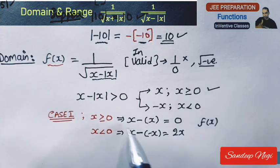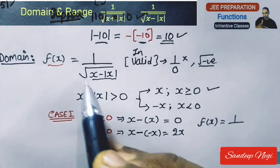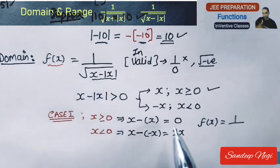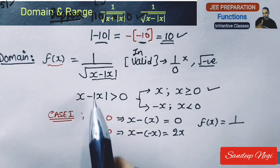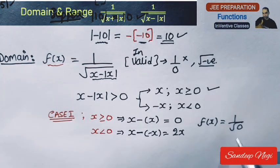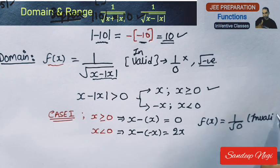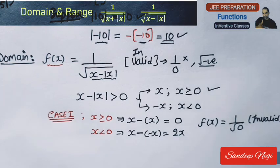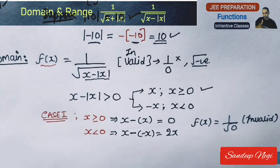Now let's check Case 1. The function becomes 1 upon under root of 0. Since 1 upon 0 is invalid, this means whenever x is 0 or greater than 0, the function gives an invalid answer. So x cannot take any value that is 0 or greater than 0 — this cannot be in the domain.